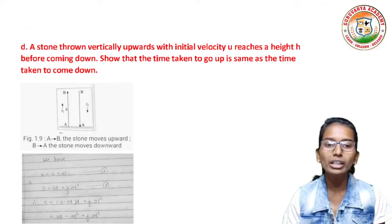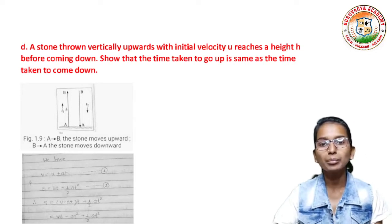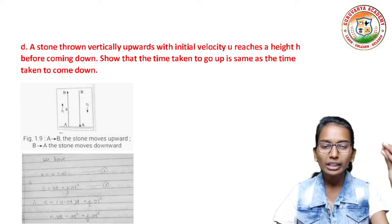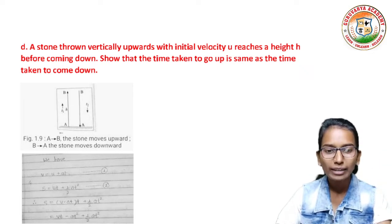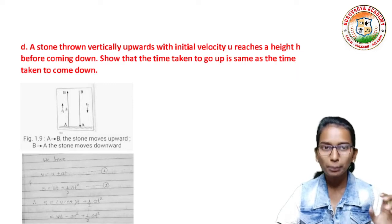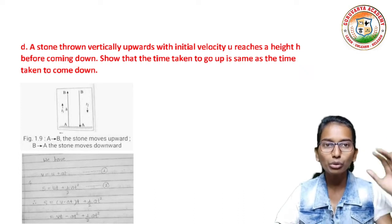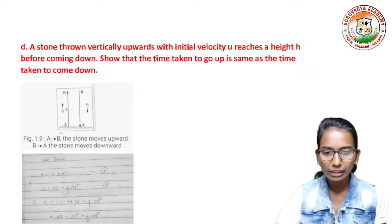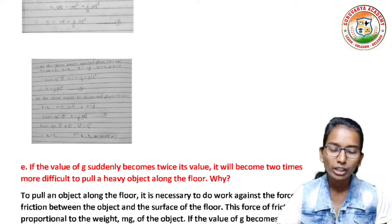A stone thrown vertically upwards with an initial velocity u reaches a height before coming down. The time taken to go up is the same as the time taken to come down. You can see the whole equation on the screen.